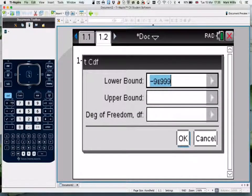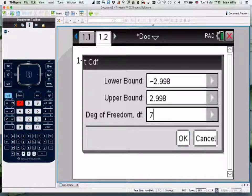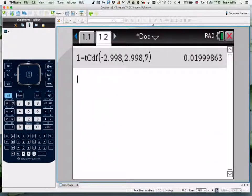Put the lower bound at -2.998 and the upper bound at 2.998. The degrees of freedom this time was 7. Press OK and you get the value 0.0199999863.